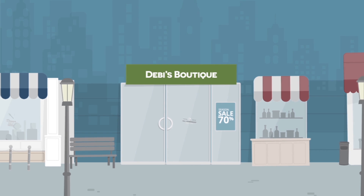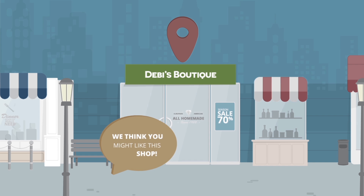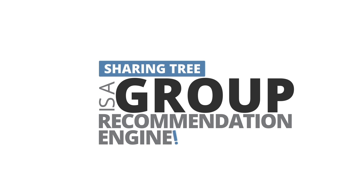However, SharingTree is much more intelligent than your basic deal finder. It will actually predict the information you're most interested in based on the preferences and geographical travel patterns of you and your friends. In other words, SharingTree is a group recommendation engine.